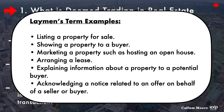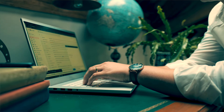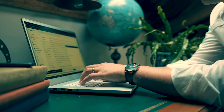Easier layman term examples would be: listing a property for sale, showing a property to a buyer, marketing a property such as hosting an open house, arranging a lease, explaining information about a property to a potential buyer, and acknowledging a notice related to an offer on behalf of a seller or buyer. Acknowledging a notice essentially means receiving emails, for example, from a buyer and relaying it to the listing agent. That will come up on the exam — when you see 'receiving notices,' just think emails.